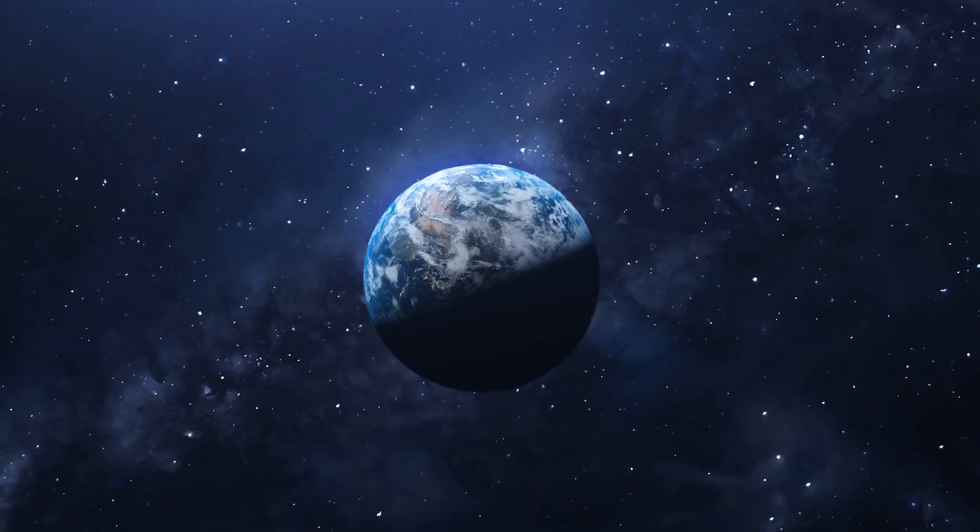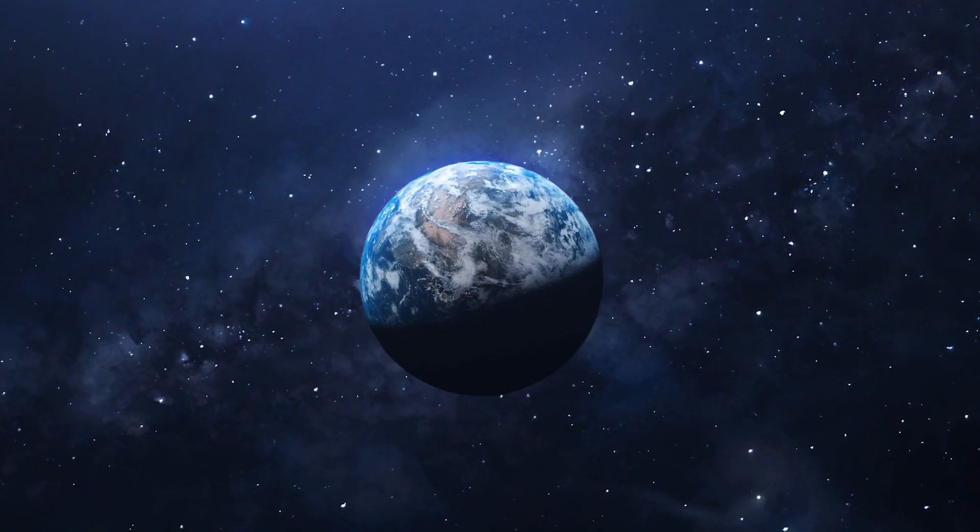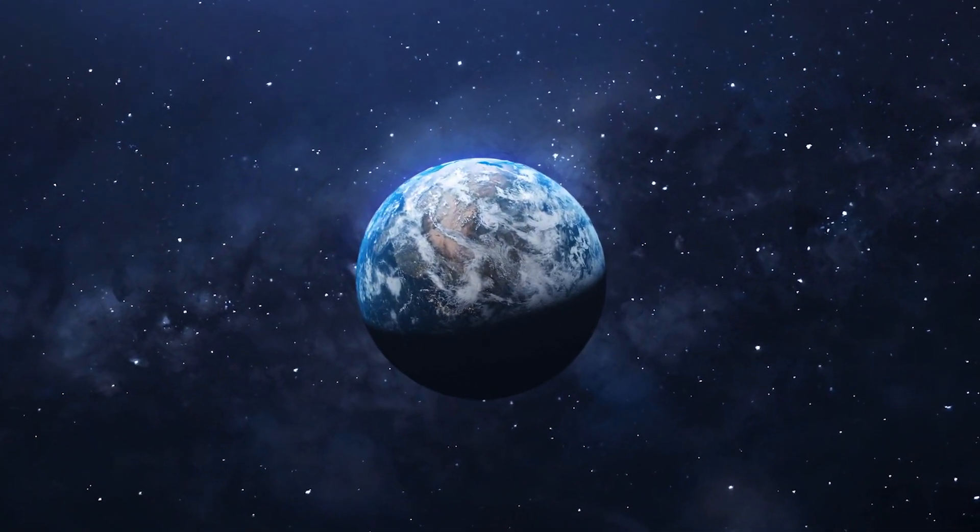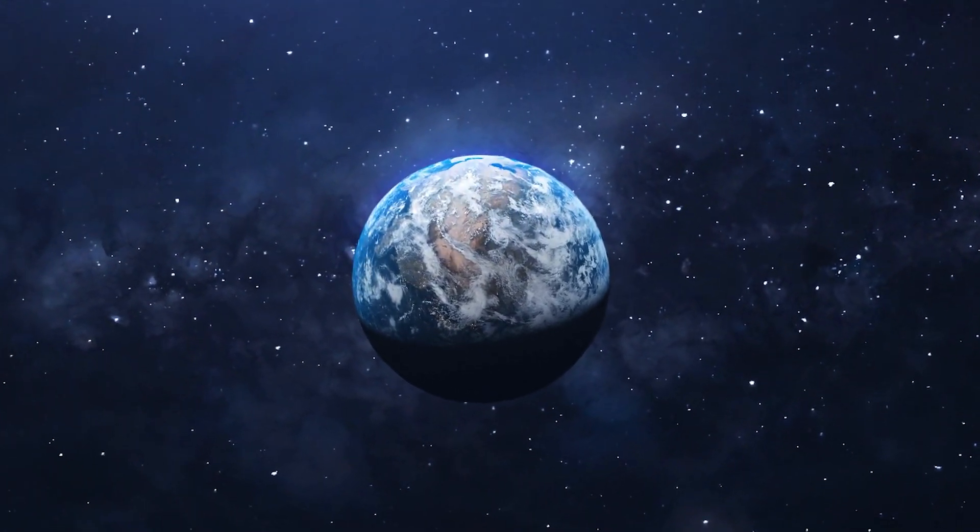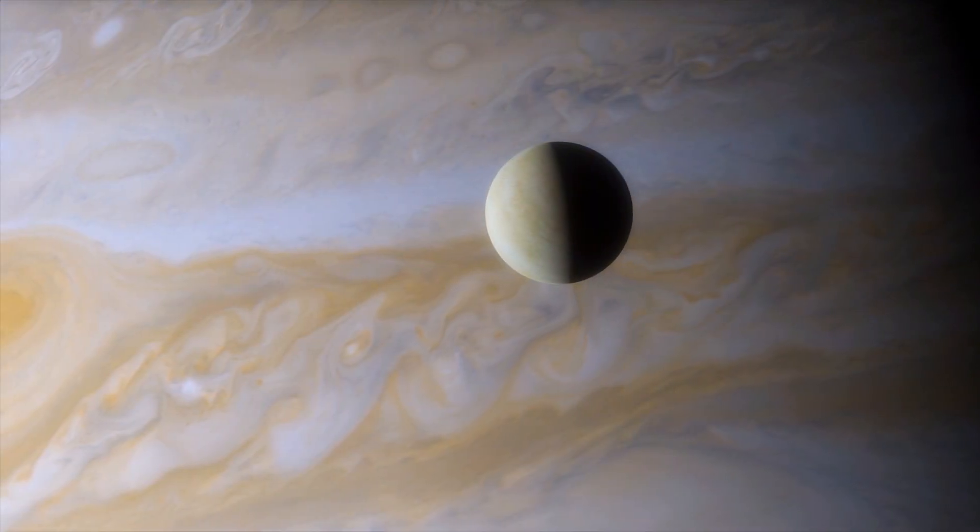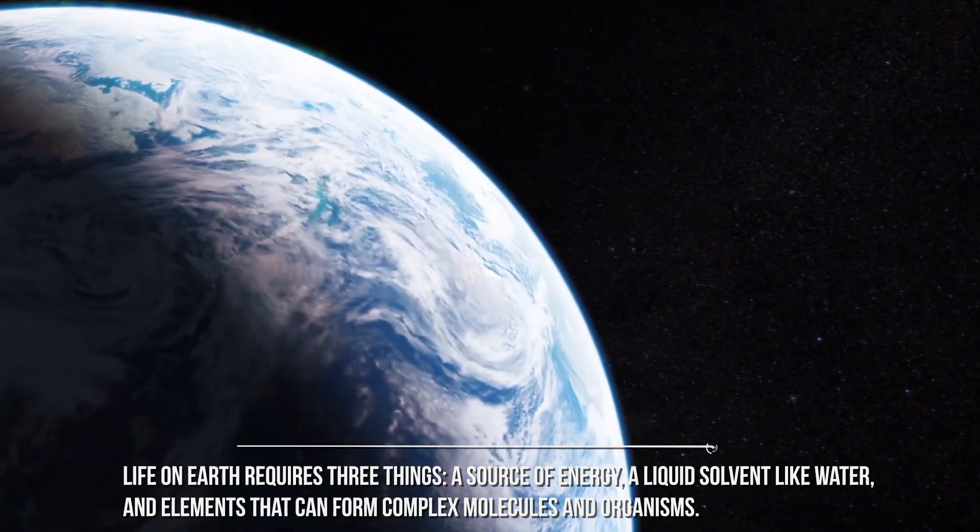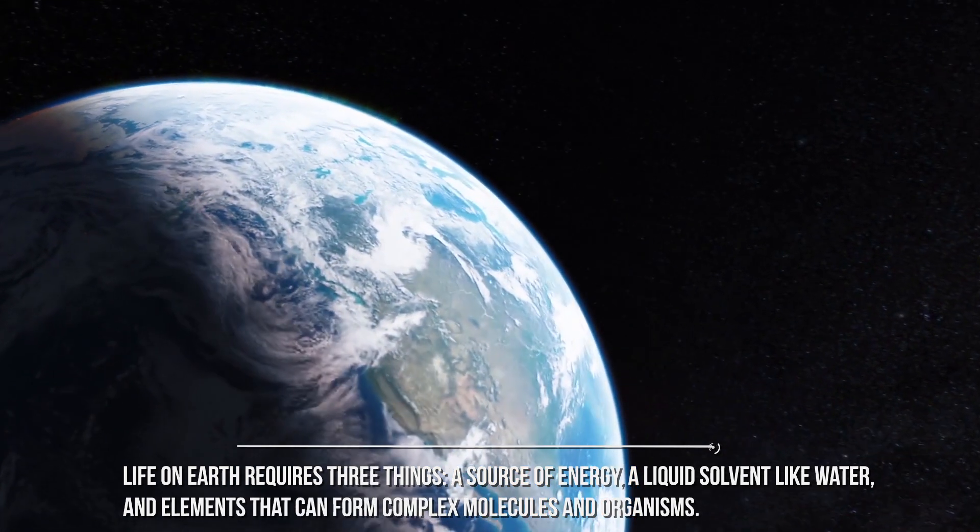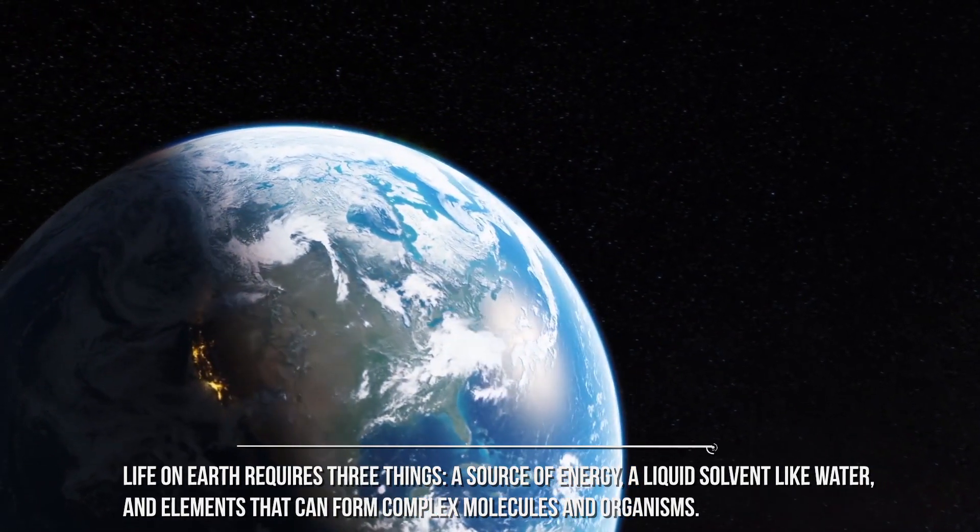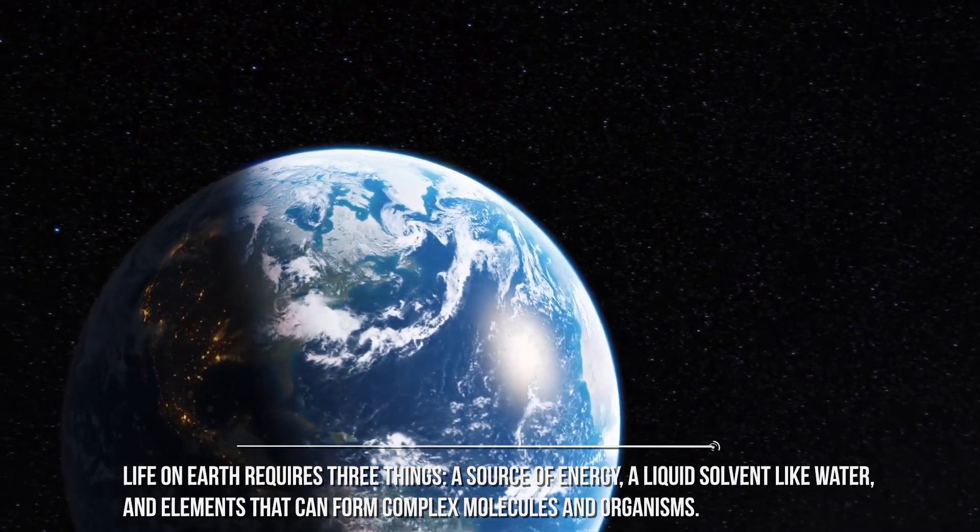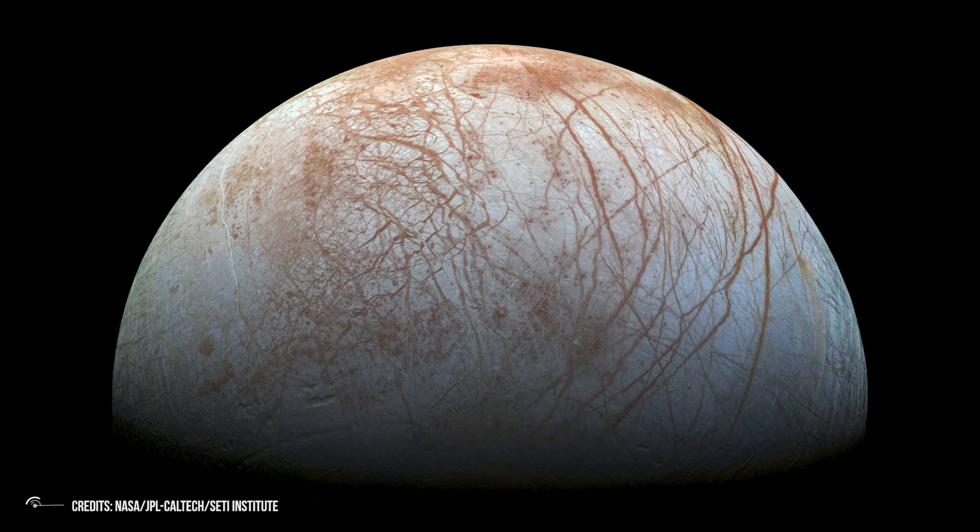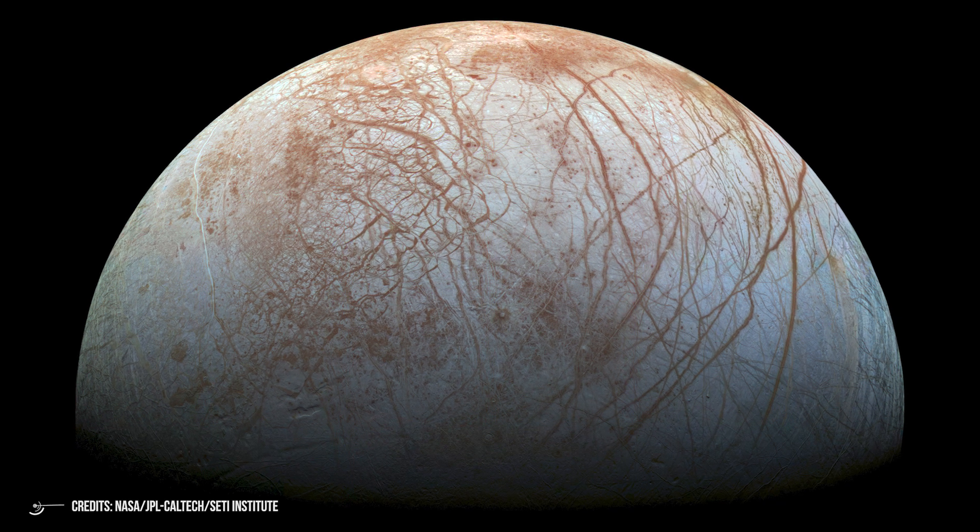Life has formed and evolved on Earth in even the harshest of conditions. Today, we know life can form and thrive in the most extreme environments on Earth, and Europa's environment might not be so extreme. Life on Earth requires three things: a source of energy, a liquid solvent like water, and elements that can form complex molecules and organisms. Jupiter's moon Europa might have all these three things.